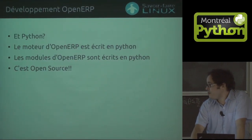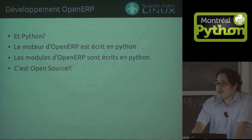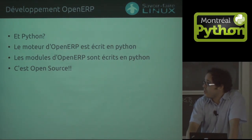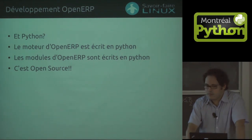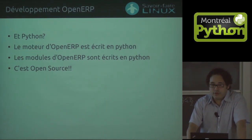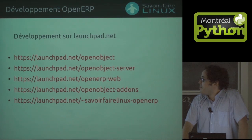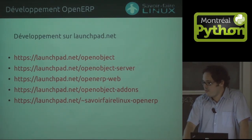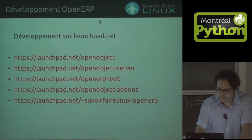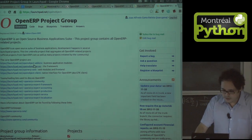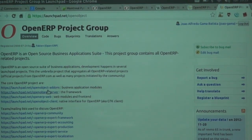The core of OpenERP is built in Python and all the extension modules are built in Python. It's a cool and nice open source software. Now we will see how we can develop modules and how we can integrate with the community and contribute to the project. These are the main sites where we develop OpenERP. It's hosted on Launchpad, and I'm pretty sure you all know Launchpad, so it's Bazaar.